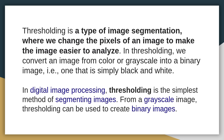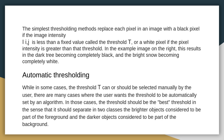From a grayscale image, thresholding can be used to create a binary image. The simplest thresholding method replaces each pixel in an image with a black pixel if the image intensity I(i,j) is less than a fixed value called the threshold T.